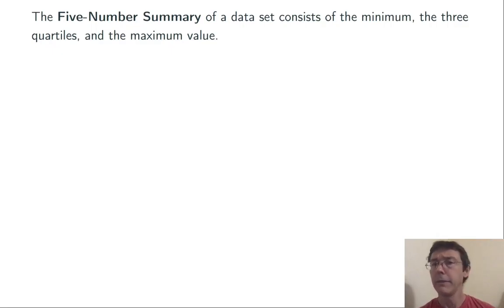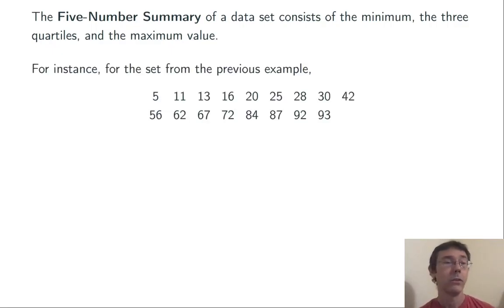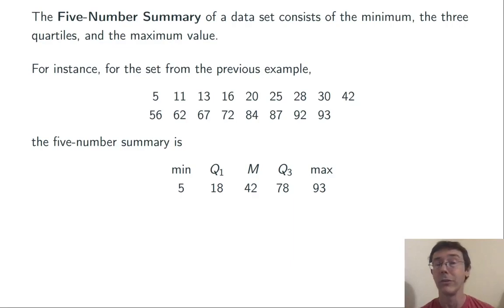The five-number summary of a data set consists of the minimum, the three quartiles, and the maximum value. For instance, for the set from the previous example, the five-number summary is: min = 5, Q1 = 18, M = 42, Q3 = 78, max = 93.